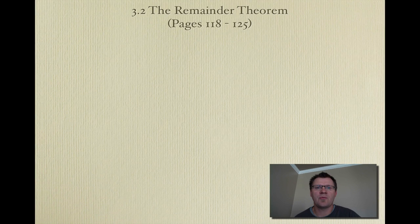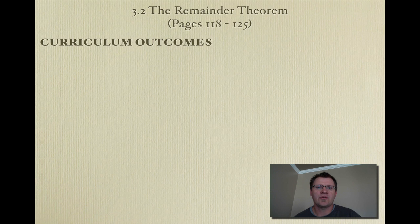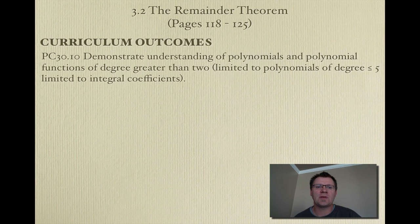All right, welcome to 3.2, the remainder theorem, on pages 118 to 125 in your textbook. Our curriculum outcome is we're still on 30.10, which we're going to demonstrate an understanding of polynomials and polynomial functions of degree greater than 2, limited to polynomials of degree less than or equal to 5, and limited to integral coefficients.